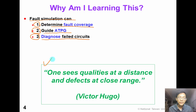Here we have a famous quotation from Victor Hugo. He said that one sees qualities at a distance and defects at close range. This is an interesting quotation. In real life, we should look at other people's qualities instead of their defects. However, for circuit testing, a fault simulator should check each defect very closely.